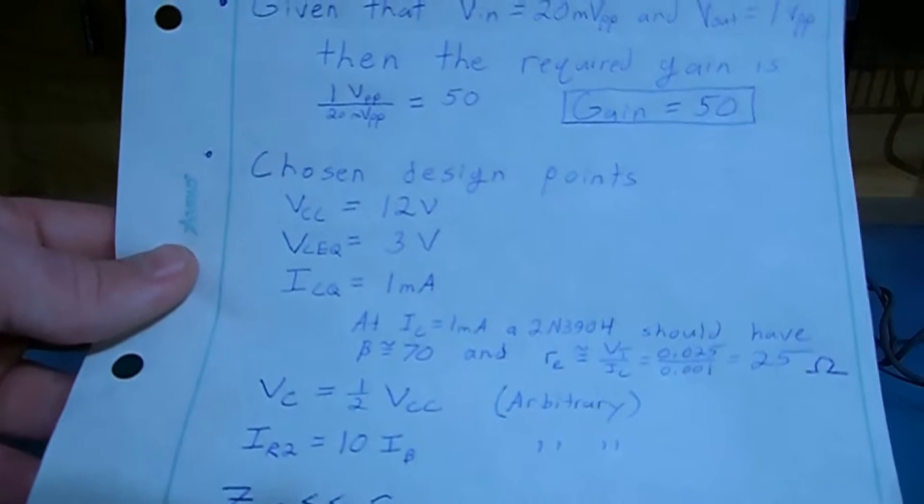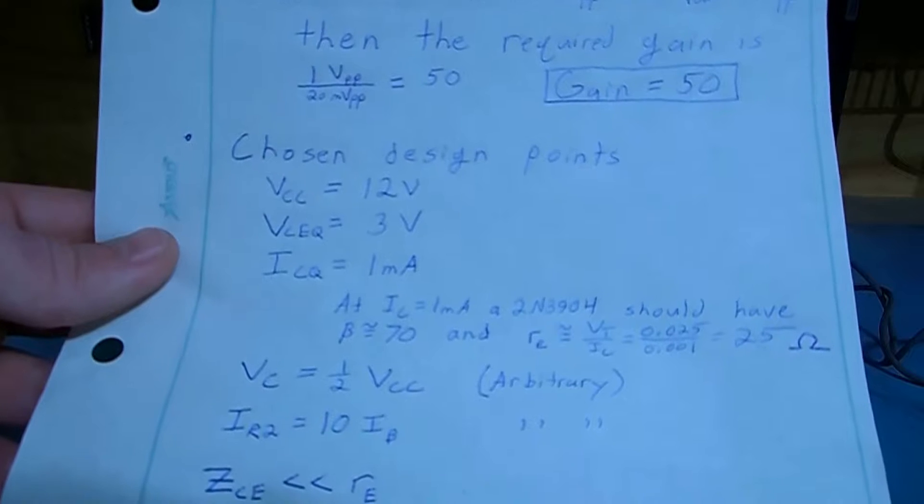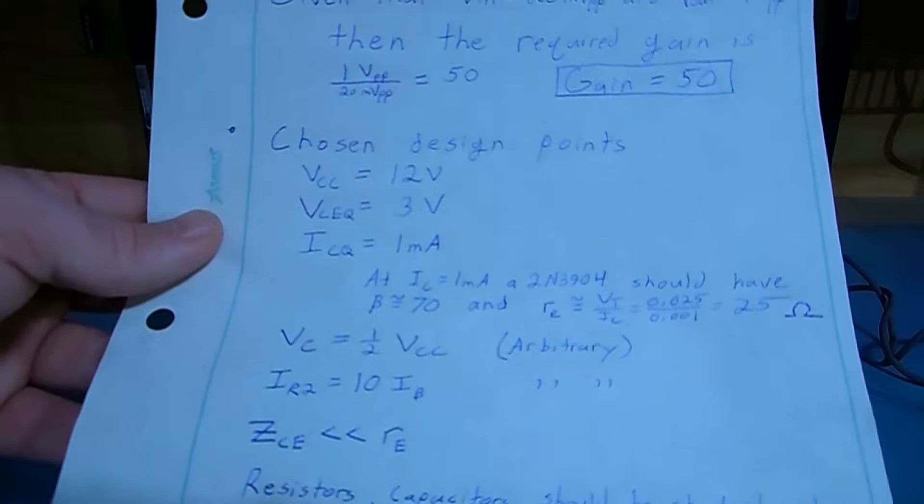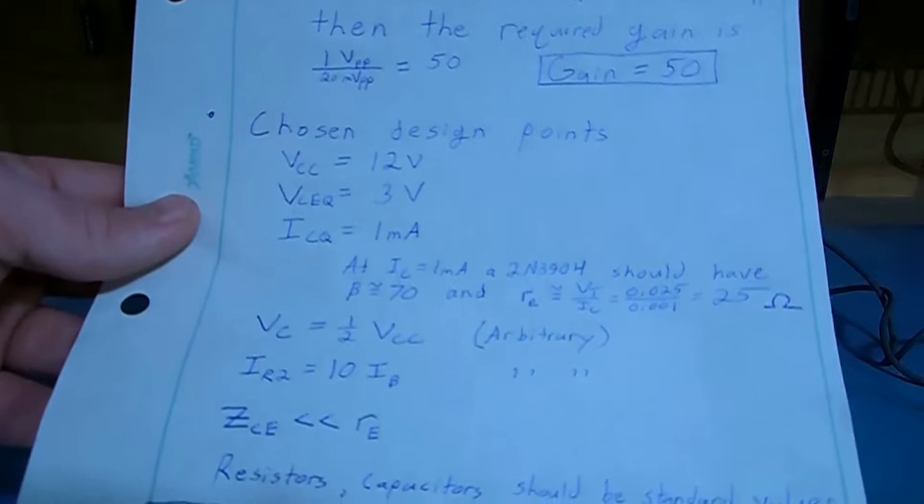That number was chosen from the data sheet because 1 milliamp is where they characterize a lot of the performance parameters of the transistor. One of those being our expected beta for the transistor of 70.